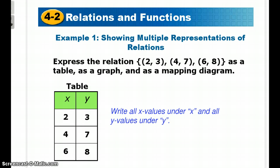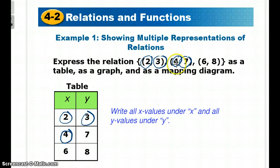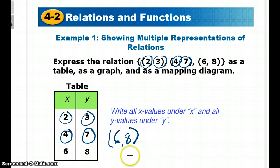So here we have multiple representations of relations. Express the relation {(2,3), (4,7), (6,8)} as a table, as a graph, and as a mapping diagram. If you're given a set of ordered pairs, one way is you can put it strictly in a table: x=2, y=3; x=4, y=7; x=6, y=8. We can translate from a set of ordered pairs into a table, or we could go from a table and put everything into an ordered pair — so if you see 6 and 8, you know that translates into the ordered pair (6, 8). Nothing complicated about that.